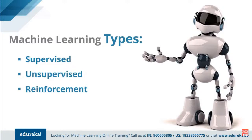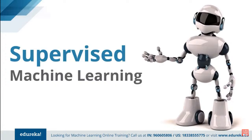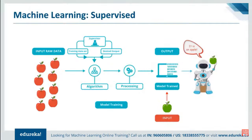Don't worry, I'll use enough examples and implementations of all three to give you a proper understanding. Starting with supervised learning: mathematically, supervised learning is where you have input variables X and an output variable Y, and you use an algorithm to learn the mapping function from the input to the output — that is, Y = F(X). The goal is to approximate the mapping function so well that whenever you have new input data X, you can predict the output variable Y for that data.